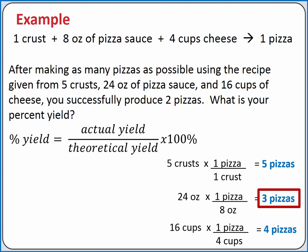We're given the actual yield in the problem, which is 2 pizzas. Plugging these into our equation and completing the calculation, we get 66.7%.